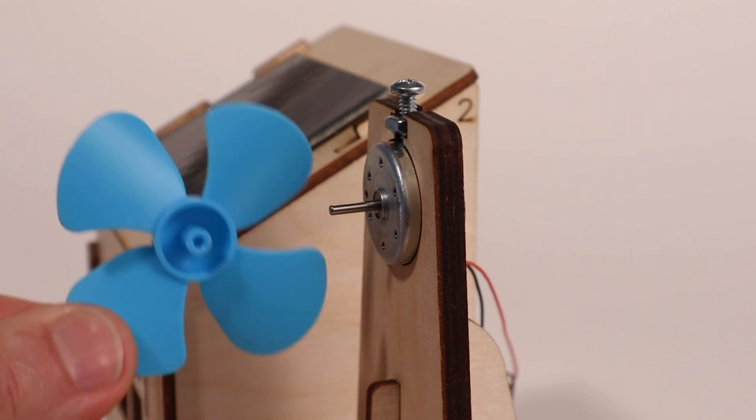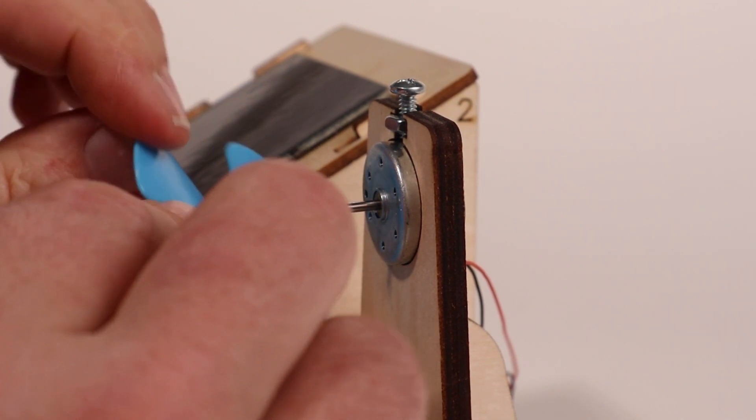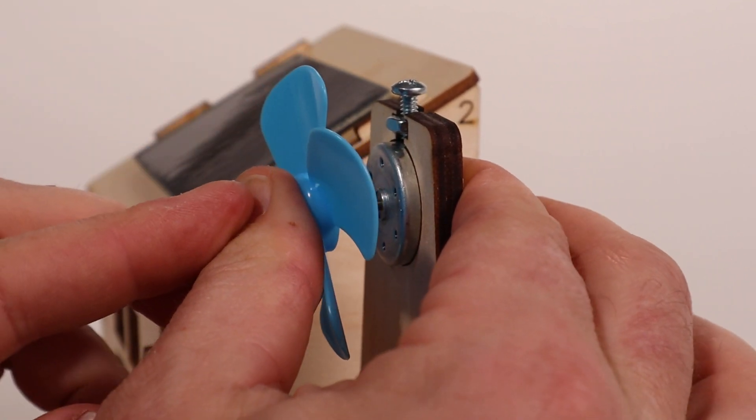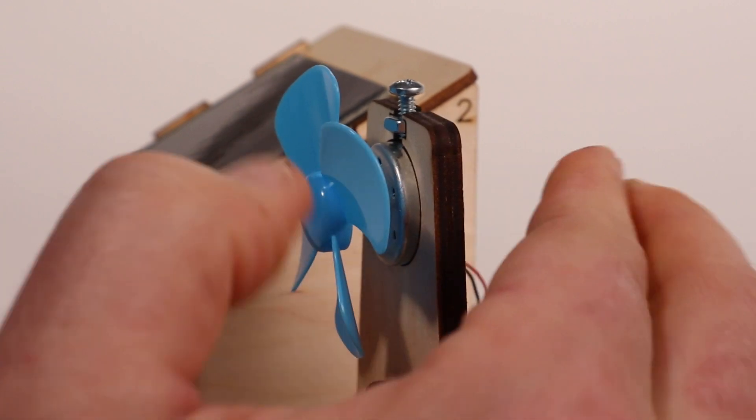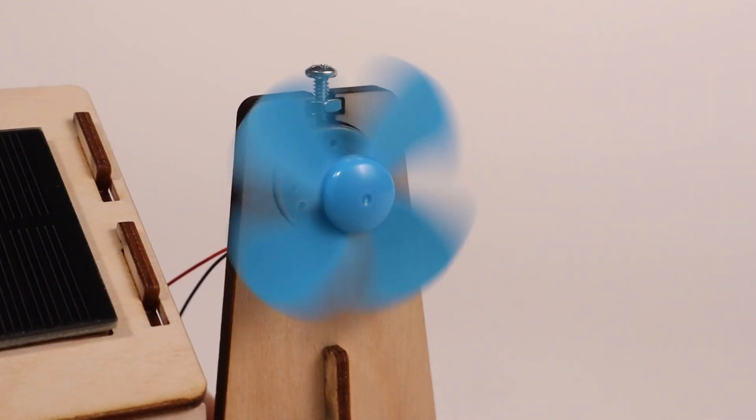Now we can add the fan blade. Simply line up the fan with the shaft of the motor and press it directly in place. When pressed all the way on, there should still be a small gap between the fan blade and the motor housing. Give the fan blade a spin with your finger or blow on it and make sure it spins freely.